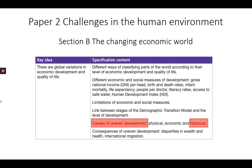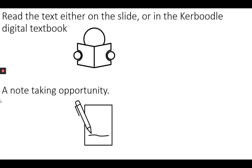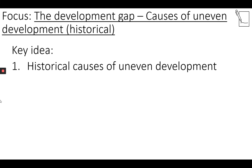In this video we're going to be looking at the final cause of uneven development, and that is the historical causes. As always, you'll need a pen and paper to complete the tasks in this video. This time we're also going to include a GCSE question from the 2019 paper. Look out for the symbols throughout the video that indicate reading and writing opportunities. Press pause while you write down the focus and restart when you're done.